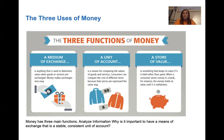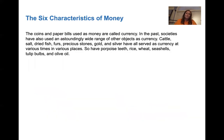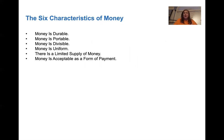A dollar bill is going to stay a dollar bill — it's never going to decrease down to zero. So we have six characteristics of money, because there have been different kinds of money used throughout history: cattle, dried fish, wheat, seashells. We like money because it's durable — you've all had money in your back pocket and your mom washed it in the laundry and it's still good. It's portable — it's in our pocket or purse.